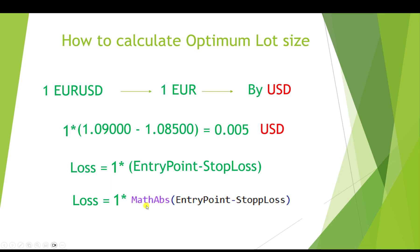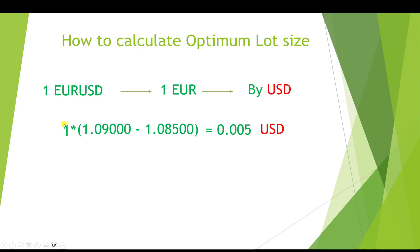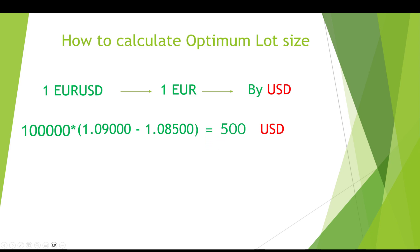If you buy 100,000 EURUSD — which equals one lot of EURUSD — by exchanging your USD, then in that same scenario you would have lost $500.